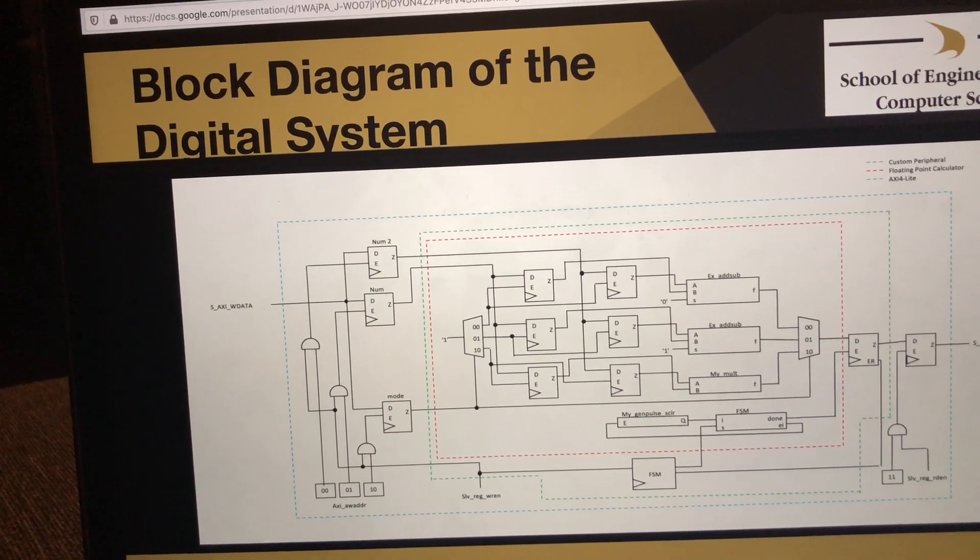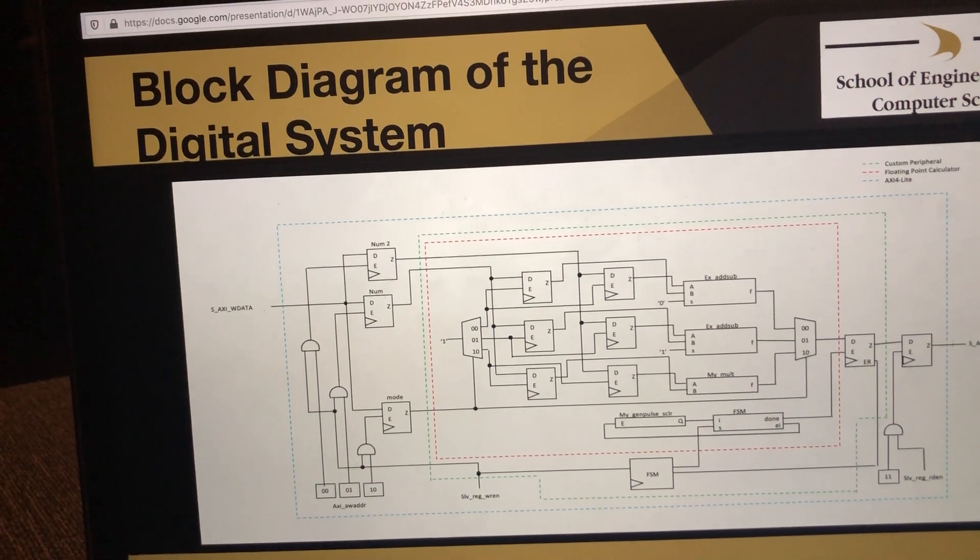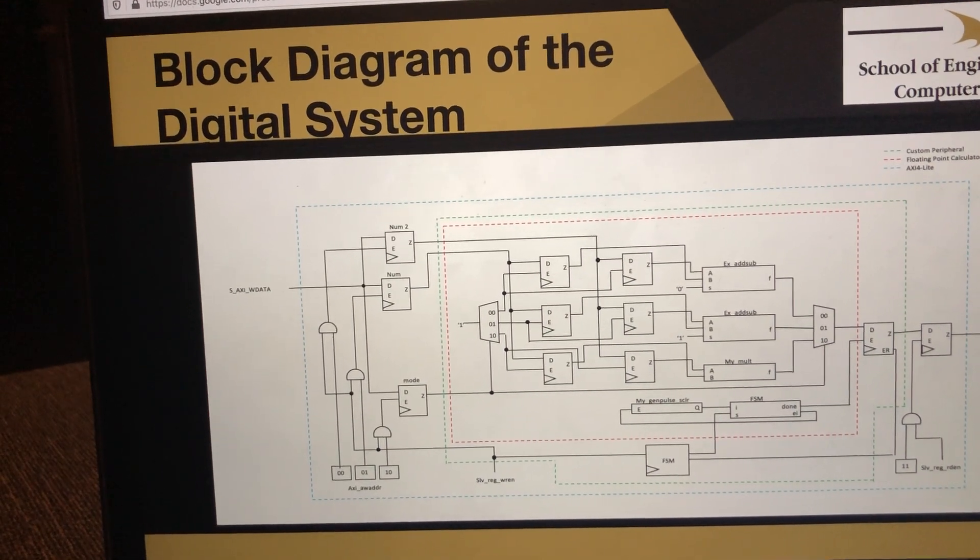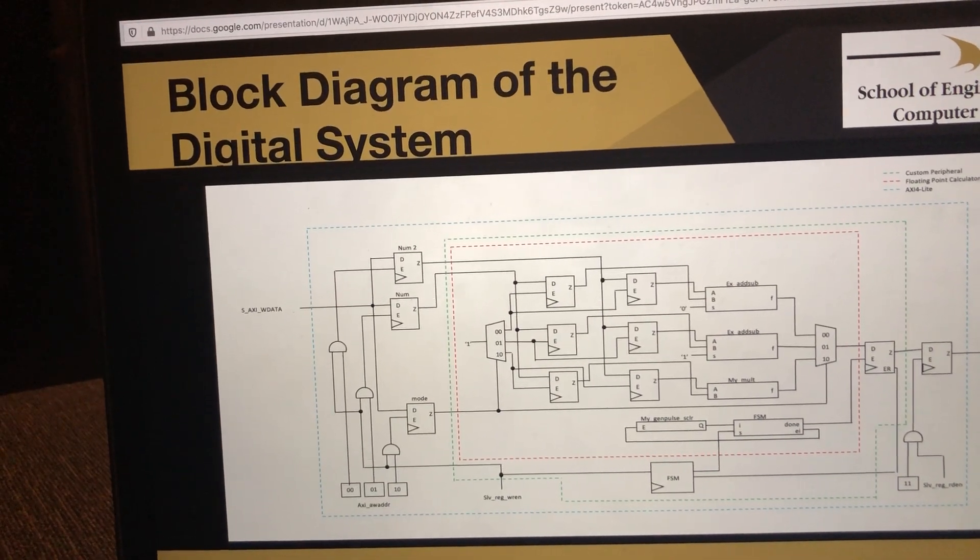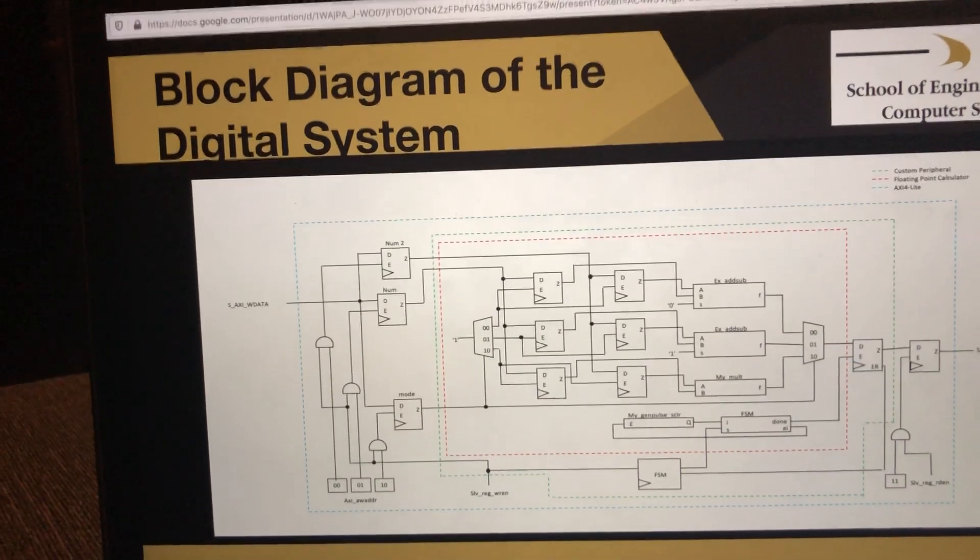NUM2 is the number on the right side of the operation. NUM is the number on the left side of the operation. And mode is the operation: addition, subtraction, or multiplication.